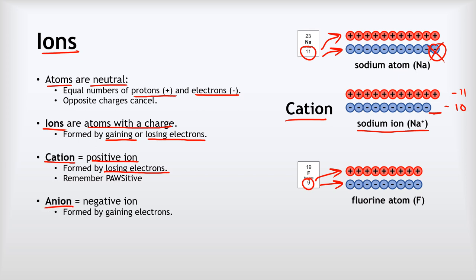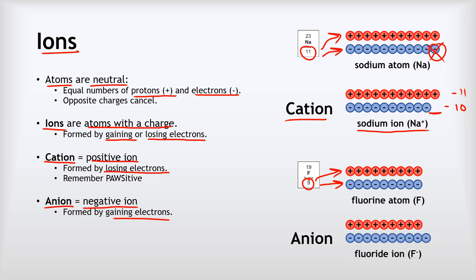Anions, on the other hand, are negative ions, and they are formed by gaining electrons. Let's look at the fluoride ion — this is formed from fluorine atoms. The number of protons has stayed the same, but this time we've gained an electron. Gaining an electron makes you negative overall because electrons themselves are negative.